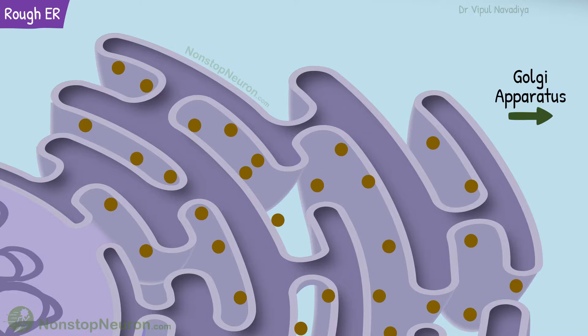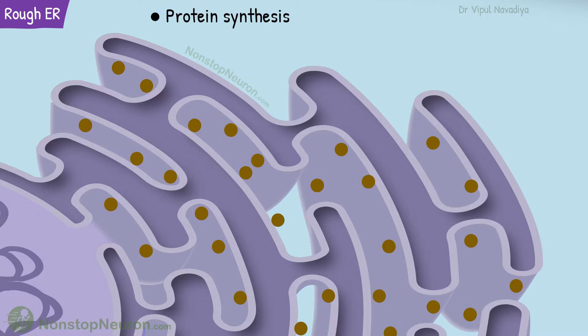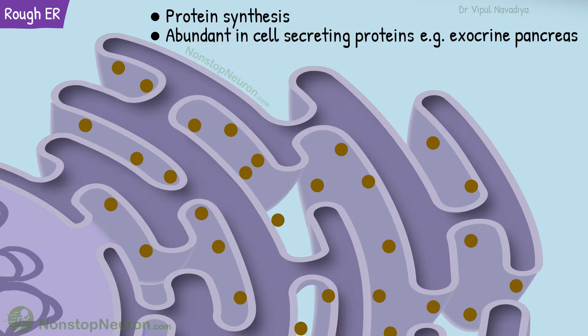Membrane proteins also follow the same path, but along the membrane. Thus, the rough endoplasmic reticulum is involved in protein synthesis, and it is abundant in cells that secrete large quantities of proteins — for example, cells of the exocrine pancreas that produce digestive enzymes.